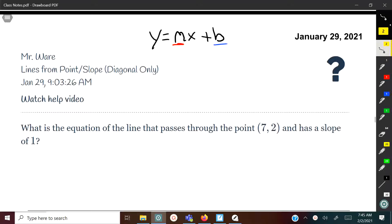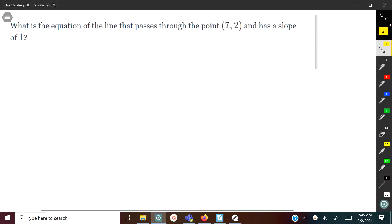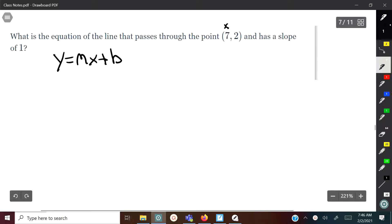Let's take a look at the first example. It says, what is the equation of a line that passes through the point (7, 2) and has a slope of 1? We're going to start with y equals mx plus b, and plug in all the other numbers except for the y-intercept.